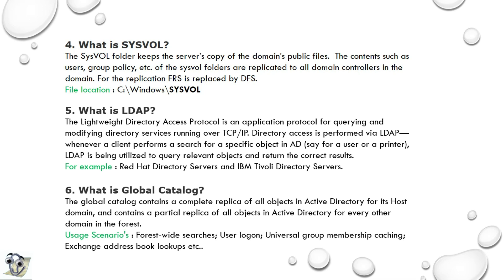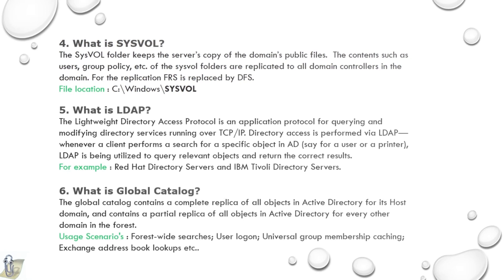Sixth question: What is a global catalog? The global catalog contains a complete replica of all objects in Active Directory for its host domain, and contains a partial replica of all objects in Active Directory for every other domain in the forest.